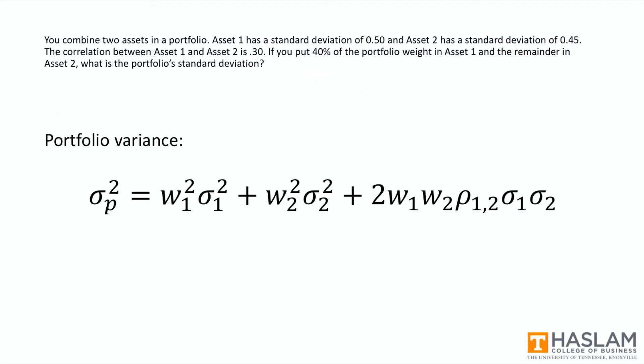Let's now just insert numbers into the formula. And I want you to pay particular attention to the squared terms. Okay, so this first term here is going to be a weight squared times a variance. So the weight for asset one is 0.4, and so that's going to be 0.4 squared in the formula. And then you're multiplying by a variance, but you were given a standard deviation.